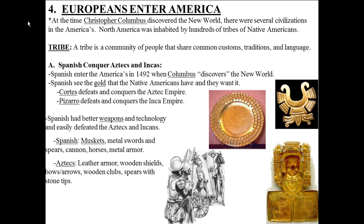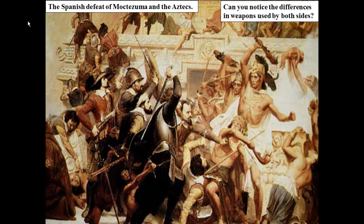Cortez was a Spanish conquistador — a Spanish conqueror. He defeated and conquered the Aztec Empire, and Pizarro defeated and conquered the Inca Empire. The reason for these conquests comes down to technology. The Spanish had better weapons: muskets, metal swords and spears, cannons, horses, and metal armor — all durable and tough. The Aztec had leather armor, which bullets go through, wooden shields, bows and arrows not strong enough to penetrate Spanish armor, and wooden clubs and spears with stone tips. In the end, the Aztec didn't stand a chance, also because they were already weakened by diseases that came with the Spanish.